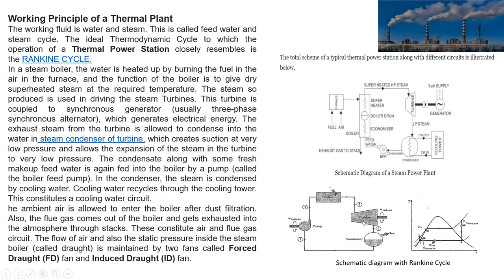The four main components of the thermal power plant are the turbine, boiler, pump, and condenser. The boiler converts water into steam with the help of burning coal. That steam is utilized to convert heat energy into mechanical energy by rotation of the turbine blades. The mechanical energy is then converted into electrical energy by the generator. The condenser condensates the exhaust steam from the turbine, and that condensate or feed water is pumped back to the boiler.